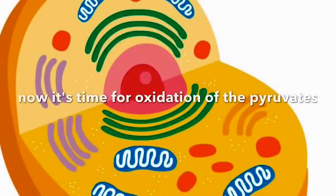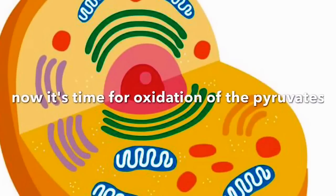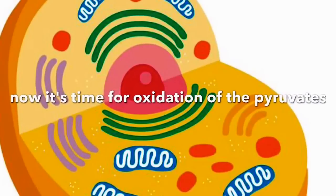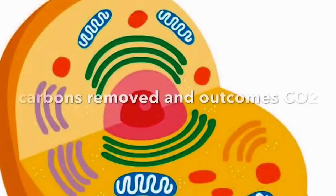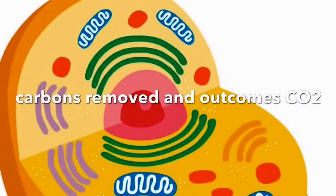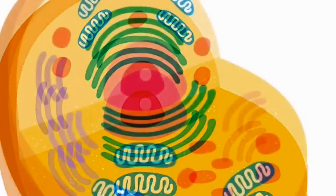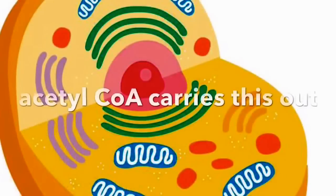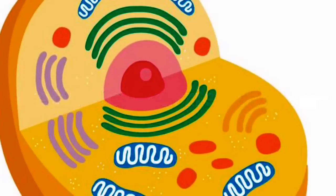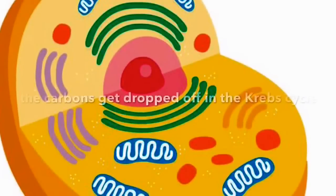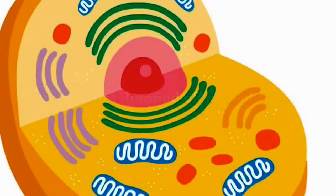Now it's time for oxidation of the pyruvate. Carbons are removed and out comes CO2. Acetyl-CoA carries this out, and the carbons get dropped off in the Krebs cycle.